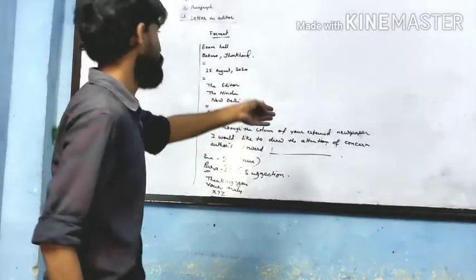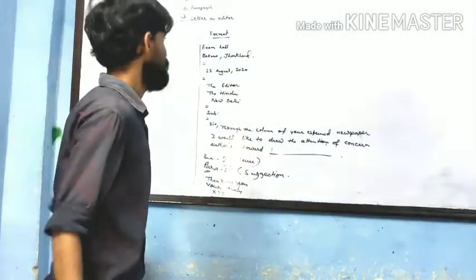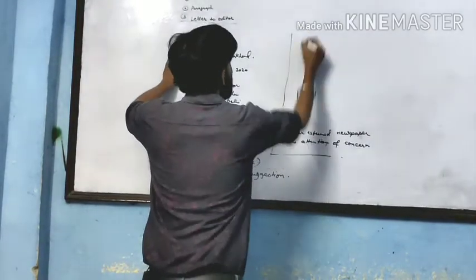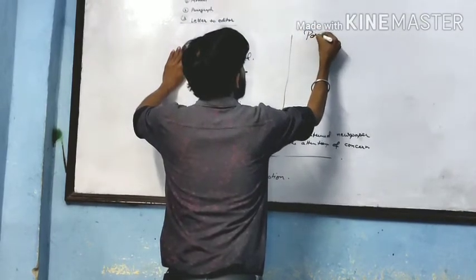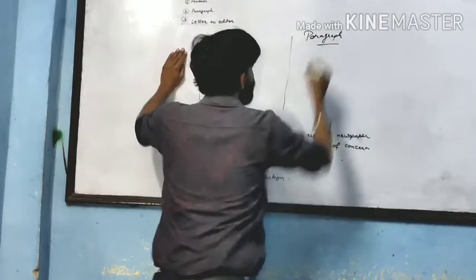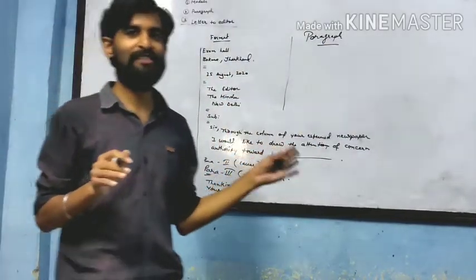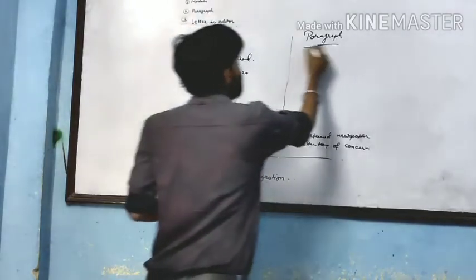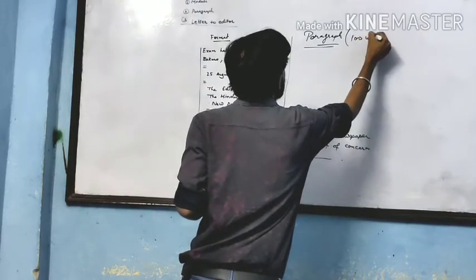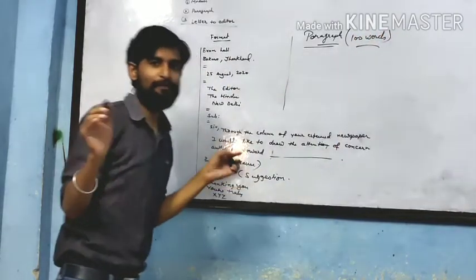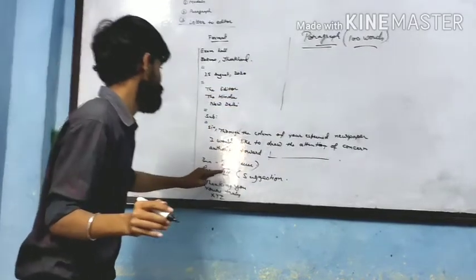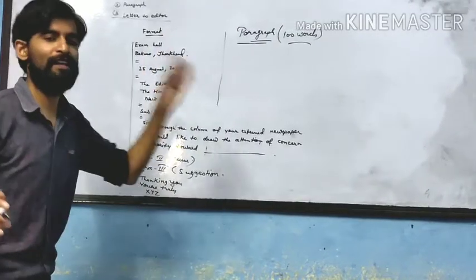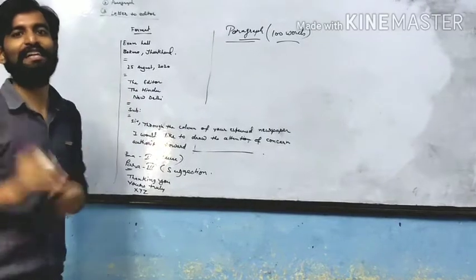This is the format of letter to editor. You can easily copy the format and use it in your test — this is the correct format for letter to editor. Now, about paragraph writing: a paragraph is not an original part of the class 10 syllabus but it is included here. A paragraph is just about 100 words. We don't have to change paragraphs the way we do in letters or articles.